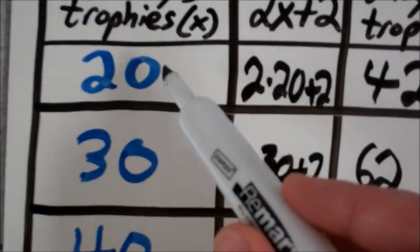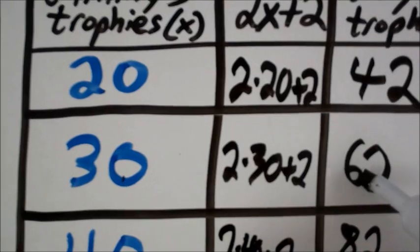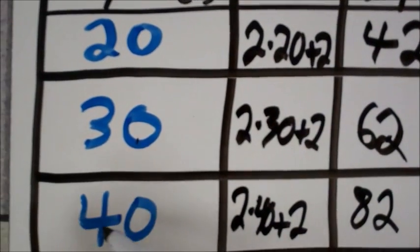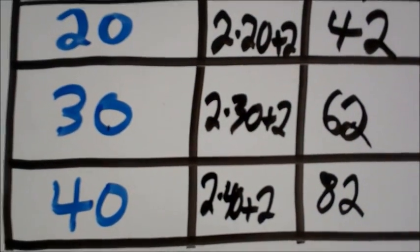So we know when Jimmy has 20 trophies, Billy has 42. When Jimmy has 30 trophies, Billy has 62. When Jimmy has 40 trophies, Billy has 82. Now we're going to graph this.